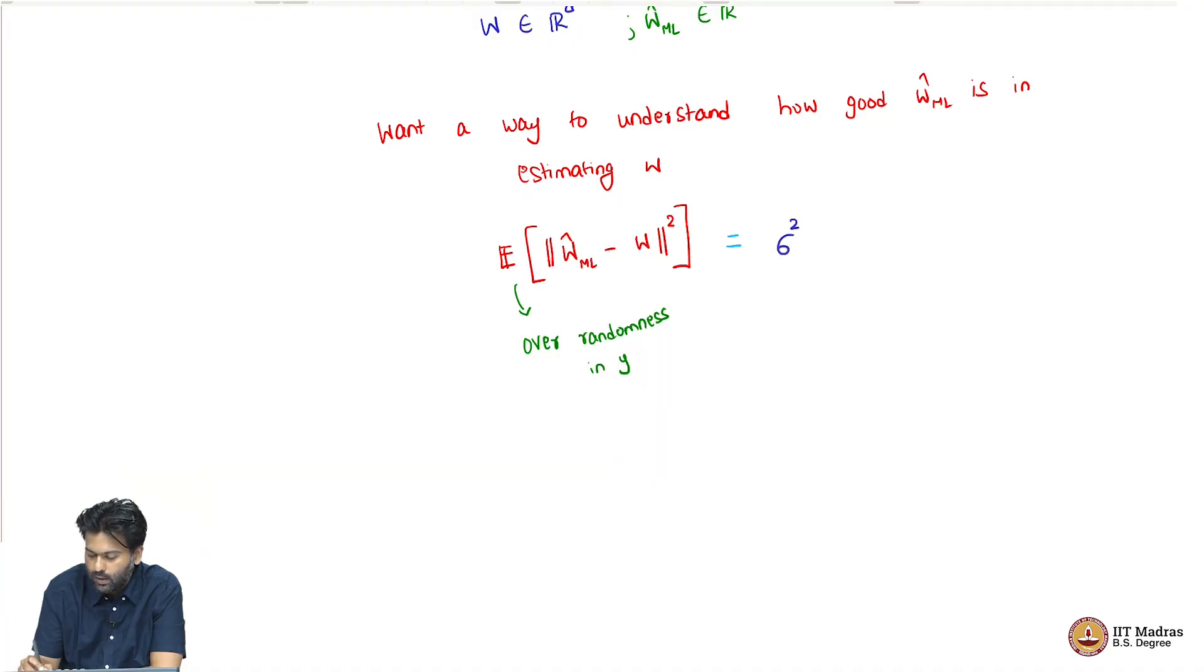But what is this value? This value turns out to be an interesting quantity and we will see why it is interesting. I will first put down what this value is. This value turns out to be sigma squared into the trace of X X transpose pseudo inverse, or inverse, both are ok. So this is telling us something very interesting. The average deviation between your estimated W hat ML and W, the true W, is a product of two terms.